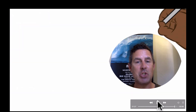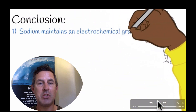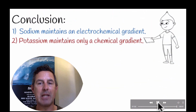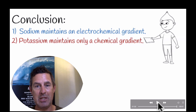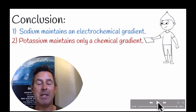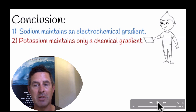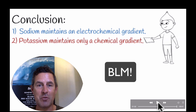So in short, sodium maintains an electrochemical gradient favoring it to move into body cells — somatic cells. And potassium maintains only a chemical gradient because it's actually moving in opposition to its electrical gradient. Don't forget George Floyd, Black Lives Matter. We'll see you next lecture.